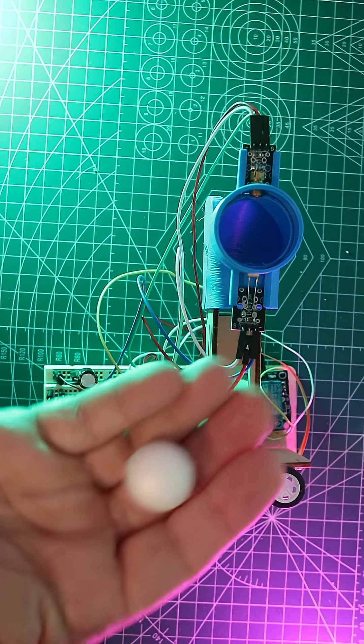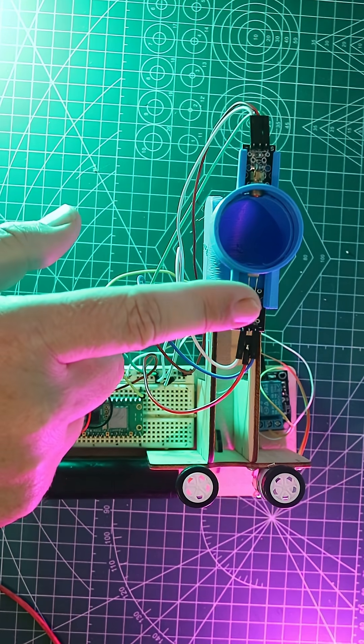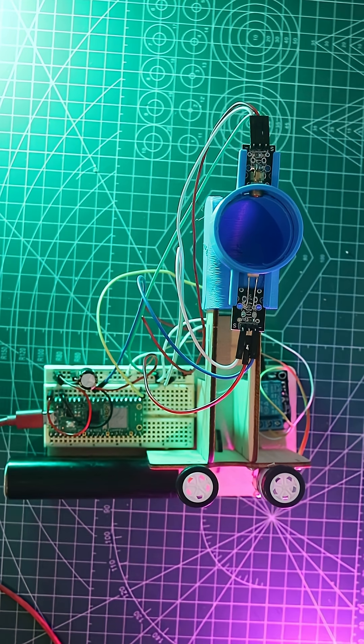Here is the ball, just styrofoam. Here is the laser and here is the LDR. Down the bottom we have the Pico and just on the other side, here is the relay.